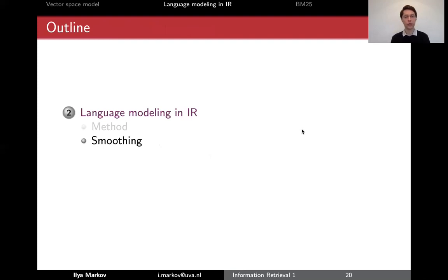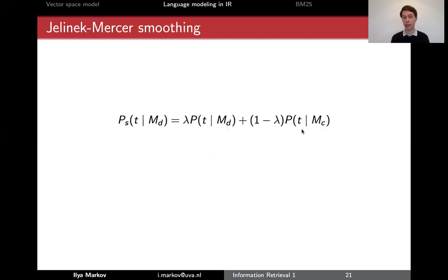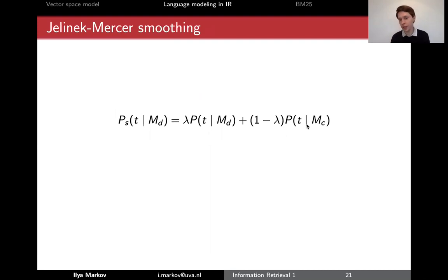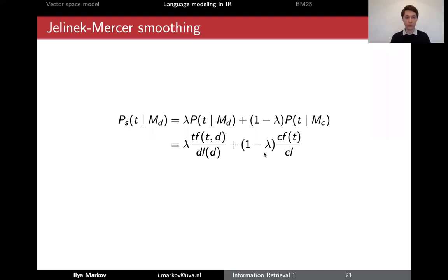What do we do? There are two widespread smoothing methods. One is a linear combination called Jelinek-Mercer smoothing: we have the probability of a term in a document, but we also have the probability of the term in the whole collection. The collection probability can never be zero if the term appears in the collection — that's the assumption — so you combine them using a constant lambda chosen based on a validation set. More specifically, the probability of a term in the collection is just the collection frequency of the term divided by the collection length.